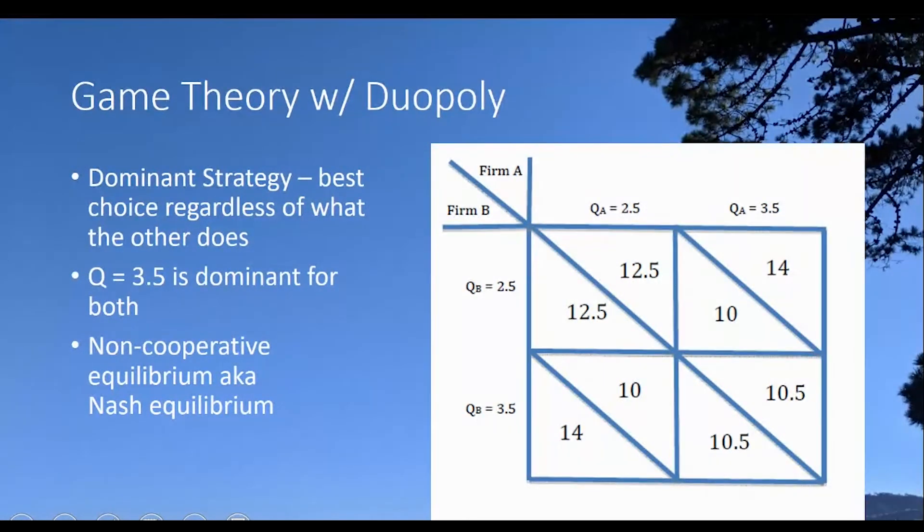Now, first thing I want to do is to define what's called a dominant strategy. A dominant strategy is the best choice that one can choose, and it will arise regardless of what the other person does. And in this particular game, it's such that there is a dominant strategy for each of the individuals. We could ask, what is firm B's best choice? Should they pick QB equals 2.5 or 3.5 if they knew that firm A was going to choose 2.5? Firm B has a choice between 12.5 and 14. Clearly, the 14 is a better choice, higher profit for B. So if firm A were to choose 2.5, this is going to be the choice of firm B. Choose 3.5.